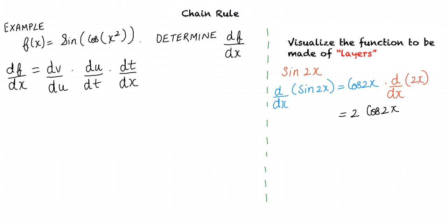So in this problem there are three layers. The outermost layer is the sine function, the next layer is the cosine function, and the innermost layer is x². Since we have three layers, we have three variables v, u, and t, where t is a function of x, u is a function of t, and v is a function of u. That is correct. Let t equal x². Then u equals cos(t), and v equals sin(u). By chain rule, df/dx equals dv/du times du/dt times dt/dx.